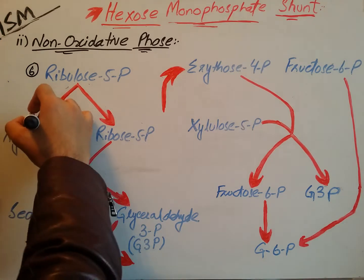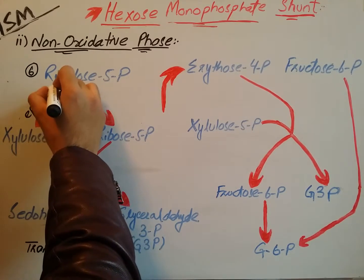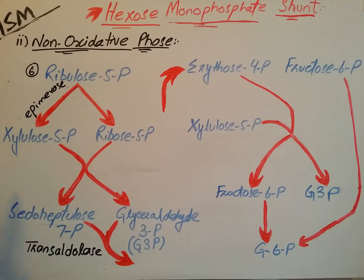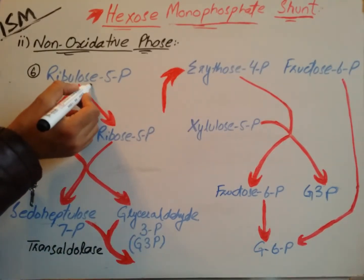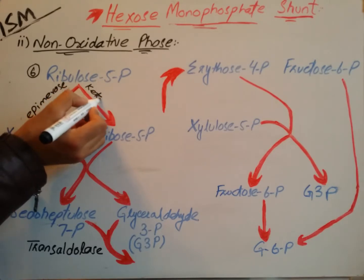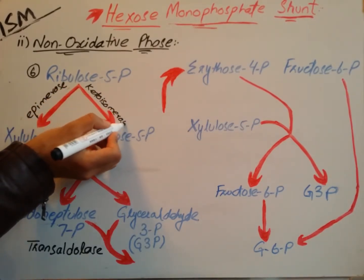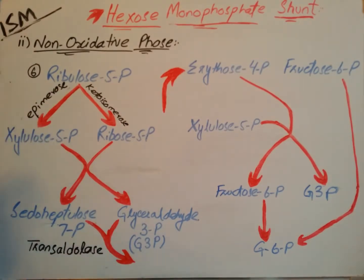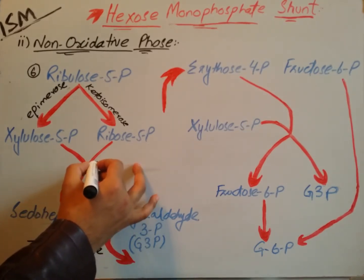The first enzyme is epimerase, which is responsible for the conversion of ribulose-5-phosphate into xylulose-5-phosphate. Another enzyme, keto isomerase, is responsible for the conversion of ribulose-5-phosphate into ribose-5-phosphate. A third enzyme involved here is transketolase.